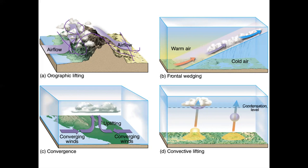This is frontal wedging — a warm front is coming in, so warm air is uplifted over the cool air. Cold air is heavy and dense, so it tends to sink. As that warm air is lifted, it adiabatically cools and we end up with clouds forming.